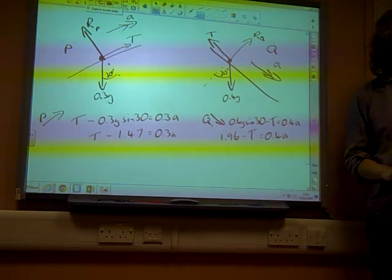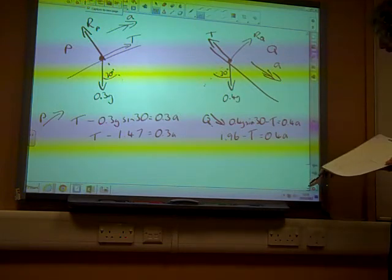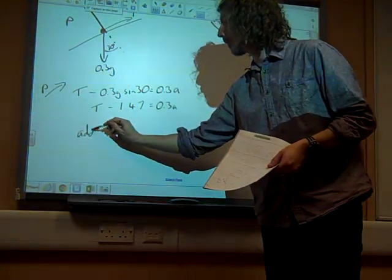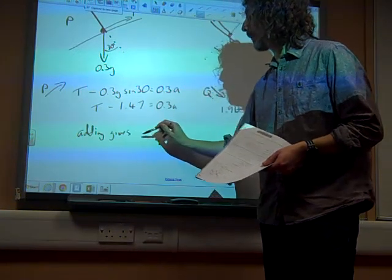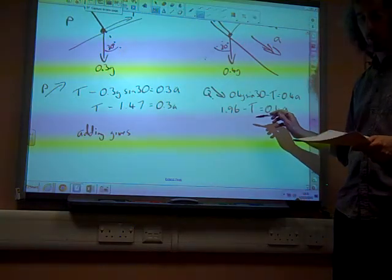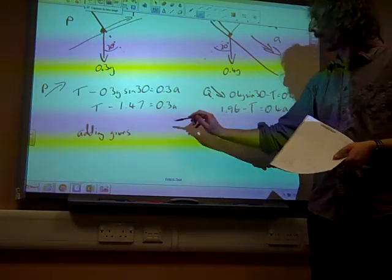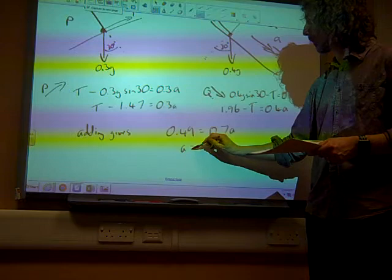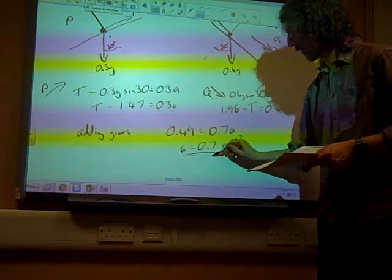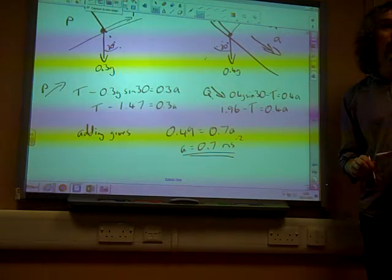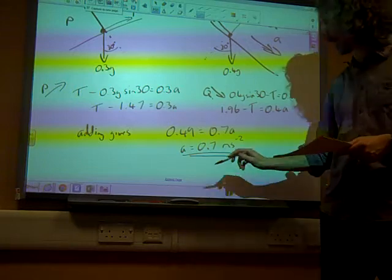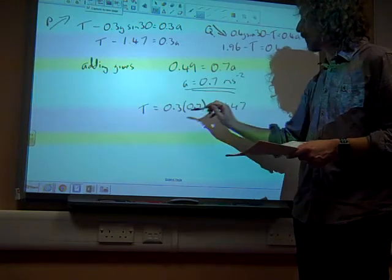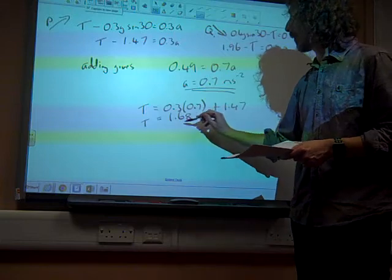So, I'm setting up my simultaneous equations. It all comes together very nicely though, hasn't it? Because these equations are lovely. If we just add the two equations together, that gives us plus T minus T, so the T cancels out. Minus 1.47 plus 1.96 is 0.49. 0.3A plus 0.4A is 0.7A. So, A is 0.7 meters per second per second. Great start. The question said find A and the tension in the string, didn't it? So, we're going to sub that value of A back in. T is 0.3 times 0.7 plus 1.47. So, it gives us a tension of 1.68 newtons.